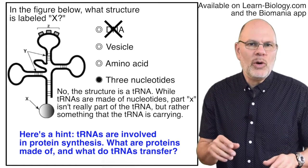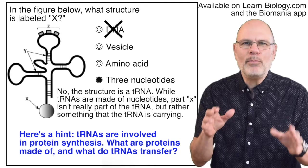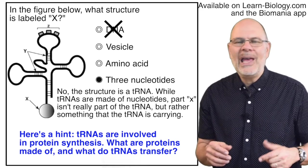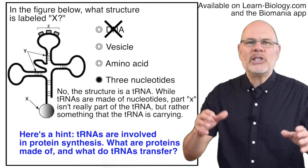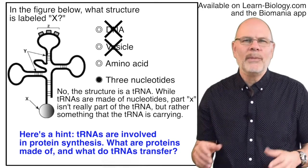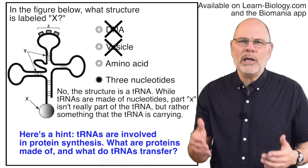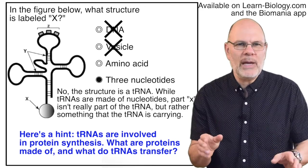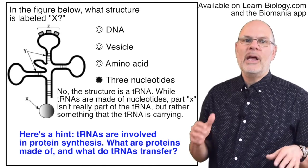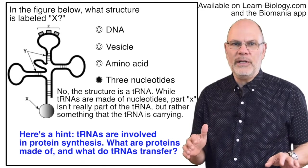You might remember that the second choice, a vesicle, is a little membrane-enclosed capsule that's used to transport things inside cells. In terms of scale, a vesicle would be much larger than a tRNA, which is a molecule. But maybe you weren't thinking of scale, and maybe that spherical shape confused you. Just slow down and think it through. Let yourself learn from the feedback.